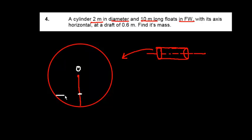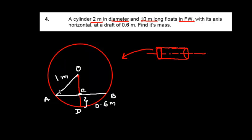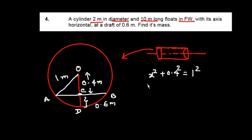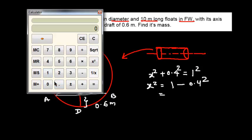The water line cuts the cross-section at points A and B, with the lowest point marked C and D. The draft is 0.6 meters. Since the radius is 1 meter, the distance from center O to the water line is 1 − 0.6 = 0.4 meters. Using the Pythagorean theorem, AC squared plus 0.4 squared equals 1 squared.